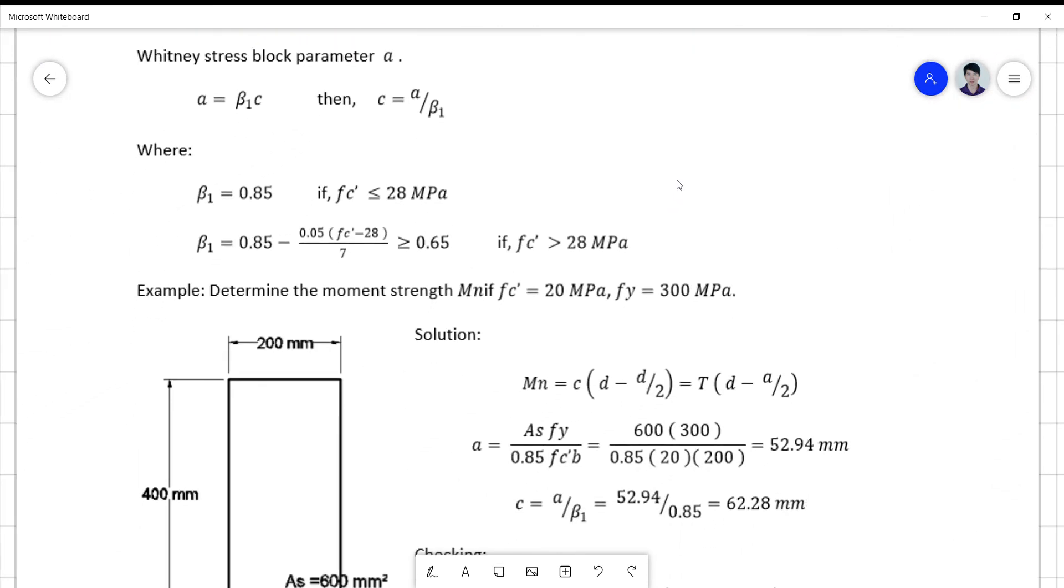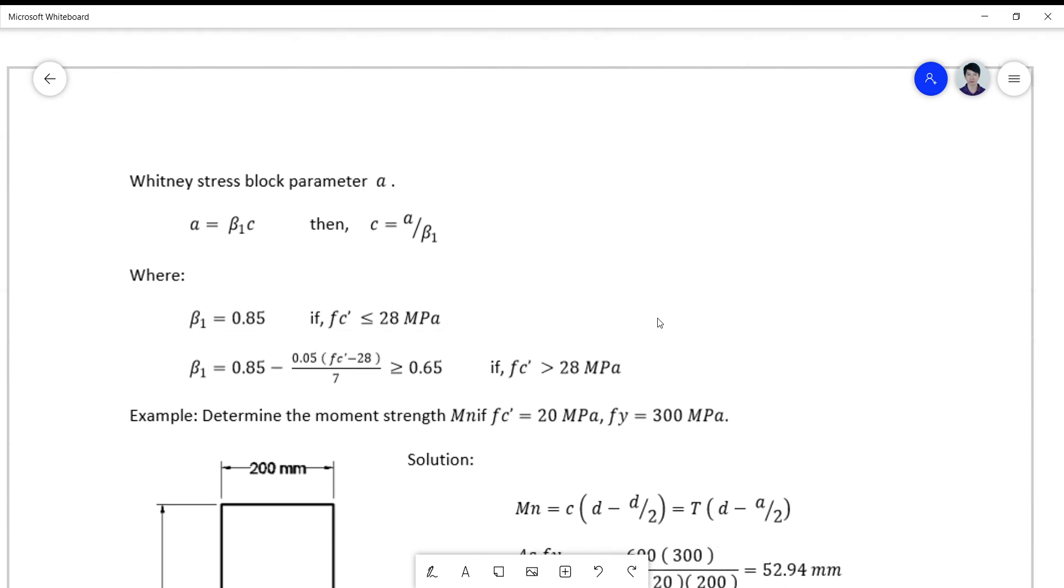So for the Whitney stress block parameter a, this is the relationship given by the works of Whitney: a is equal to beta 1 times c, where beta 1 is actually related to the value of fc prime. So if fc prime is less than or equal to 28 megapascal, use beta 1 equals 0.85. And if fc prime is greater than 28 megapascal, you use this formula, but you should not exceed a value of 0.65. So this is the minimum value for your fc prime.